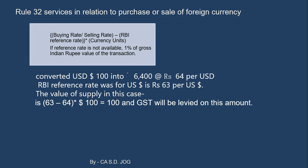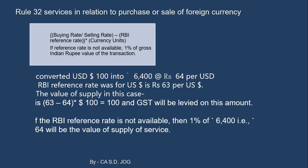In case the RBI reference rate is not available, 1% of the gross Indian rupee value of the transaction applies. So if the Indian value is Rs. 64,000 (100 USD at Rs. 64), then 1% of Rs. 64,000 equals Rs. 640, which will be the value of service in this case. So the formula uses the difference between actual rate and RBI reference rate multiplied by currency units, or 1% of Indian rupee equivalent if the reference rate is unavailable.